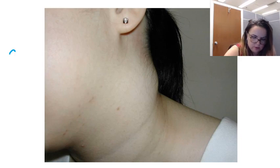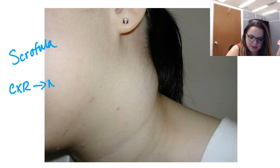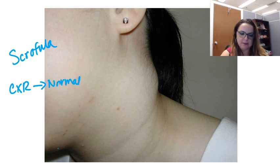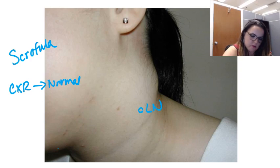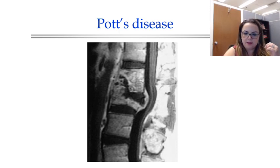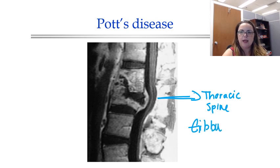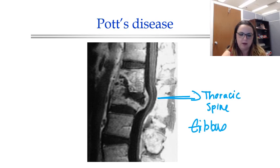Scrofula is cervical lymphadenitis due to TB. In this case the chest X-ray may actually be normal because the TB is localized to the cervical lymph node. Pott's disease involves bone and joint TB — specifically TB of the thoracic spine, where collapse of the vertebrae causes what is known as a gibbus deformity, which is a sequela of advanced skeletal TB.